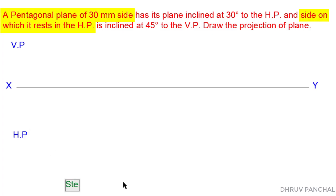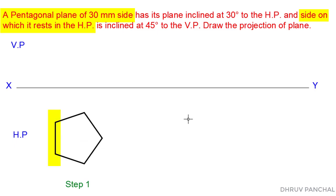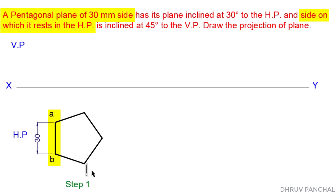As per the given data, the side of the pentagonal plane is resting in the horizontal plane. So in Step 1, we will assume that the pentagonal plane is resting in the horizontal plane. In that case, the top view will give us the true shape of the pentagonal plane. Draw the 30 mm side pentagonal plane in the horizontal plane and name the corner points A, B, C, D, and E, as shown.